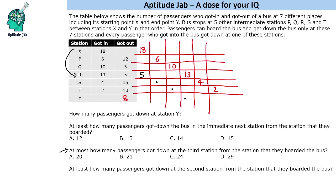Looking at P and its third station S: 15 people got down at S but only 6 boarded at P, so we take the smaller number — 6. For Q and T: 10 and 10 are equal, so we place 10. For R and Y: 13 boarded at R but only 8 got down at Y, so we place 8. This gives a preliminary total of 29, but constraints may reduce this.